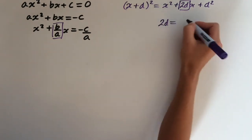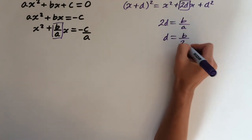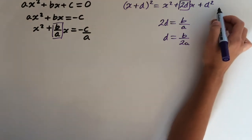So 2d equals b over a. So solving for d, we get b over 2a.